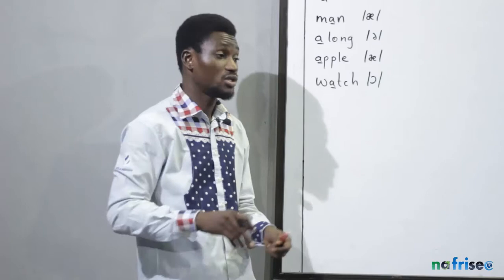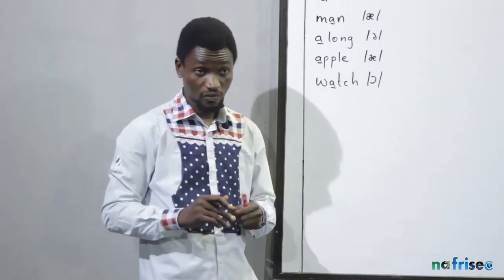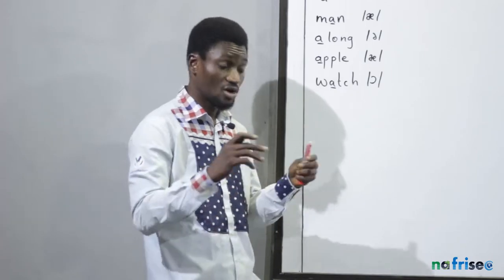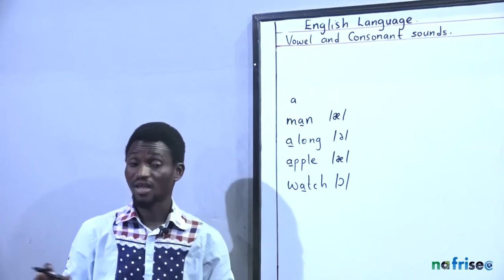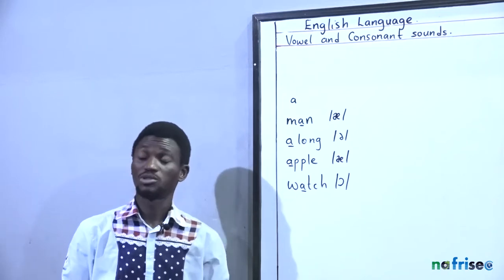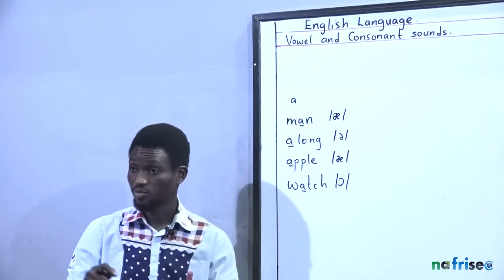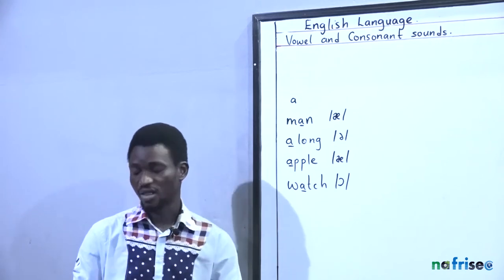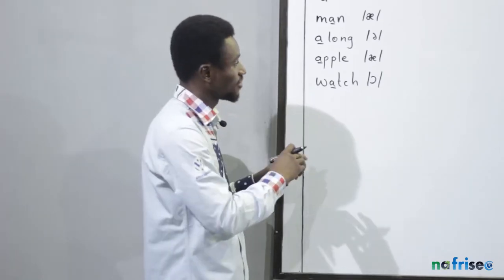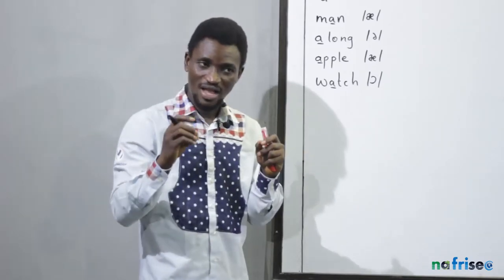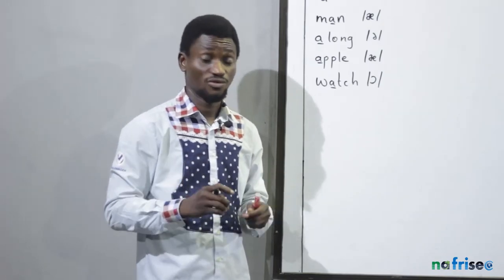These vowel sounds are subdivided into two types: the monophthongs and the diphthongs. Monophthongs are just one sound, while diphthongs are the combination of two monophthongs. As for the consonant sounds, we've already treated the silent sounds. Now we're going to treat those sounds that are actually pronounced. I want you to follow me to class and let's look at those letters that produce each of the sounds.